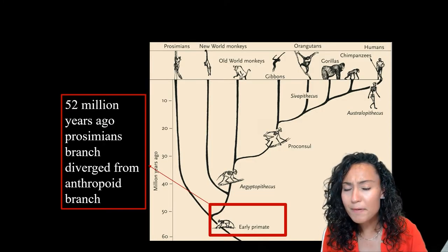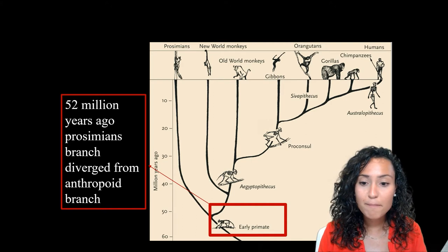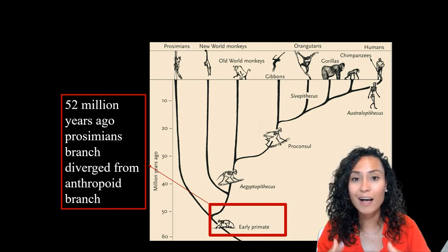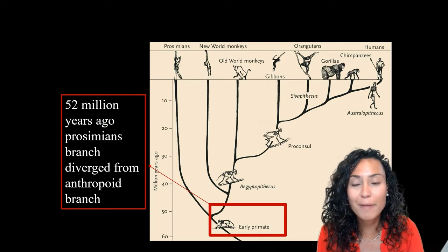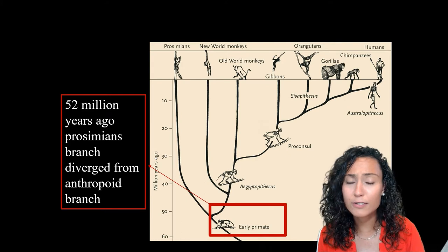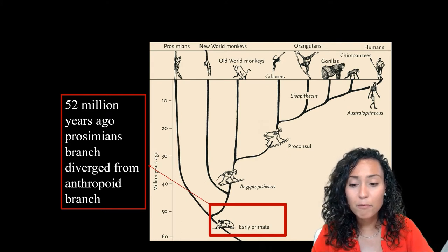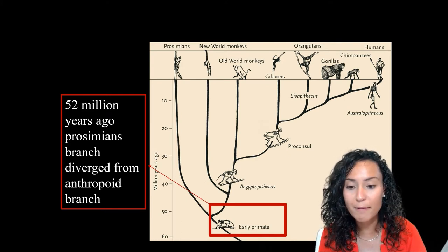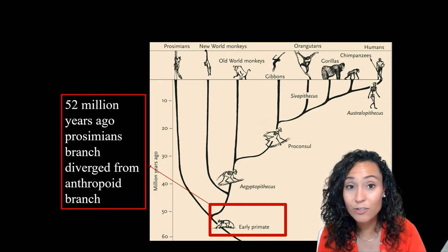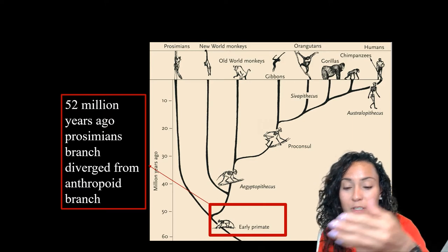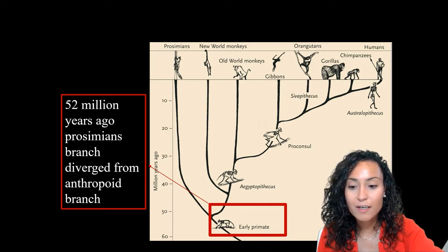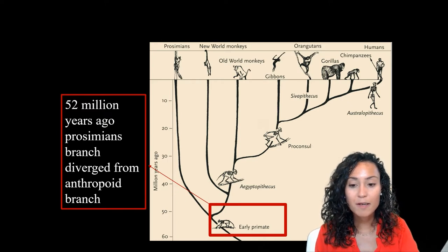Darwin basically argued that humans, apes, monkeys, and prosimians all share a common original primate ancestor. Sometime around 52 million years ago, prosimians break away from these other primate groups, and our direct primate ancestors go on a totally different set of evolutionary journeys from these early prosimian ancestors.